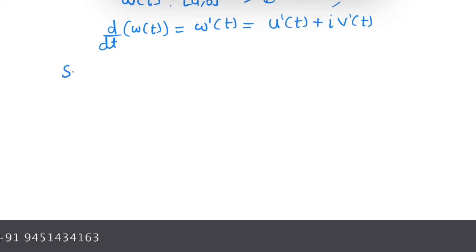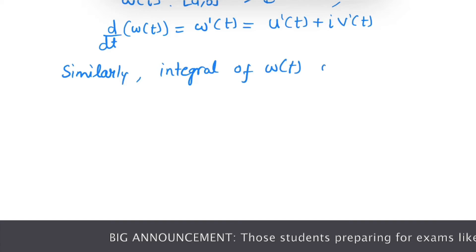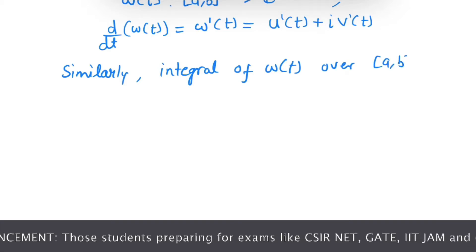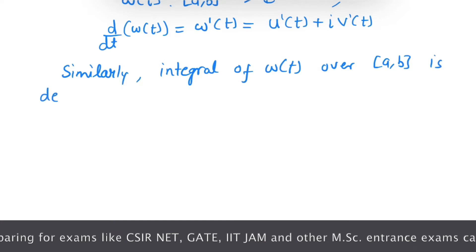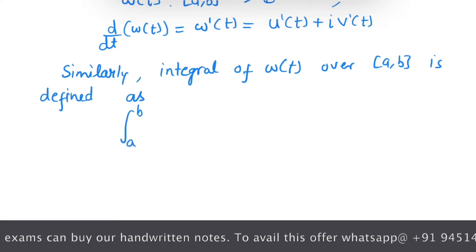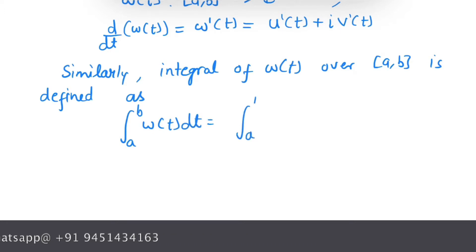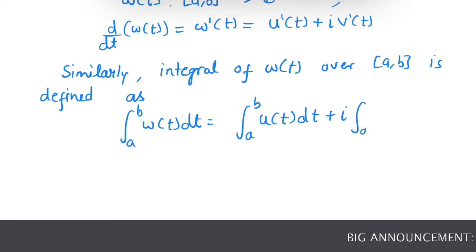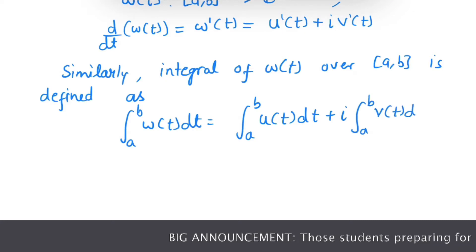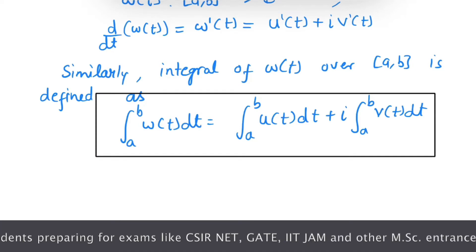Similarly, the integral of W(t) over interval [a, b] is defined as: the integral from a to b of W(t) equals the integral from a to b of the real part u(t), plus i times the integral of the imaginary part v(t), provided that the integrals on the right hand side exist.